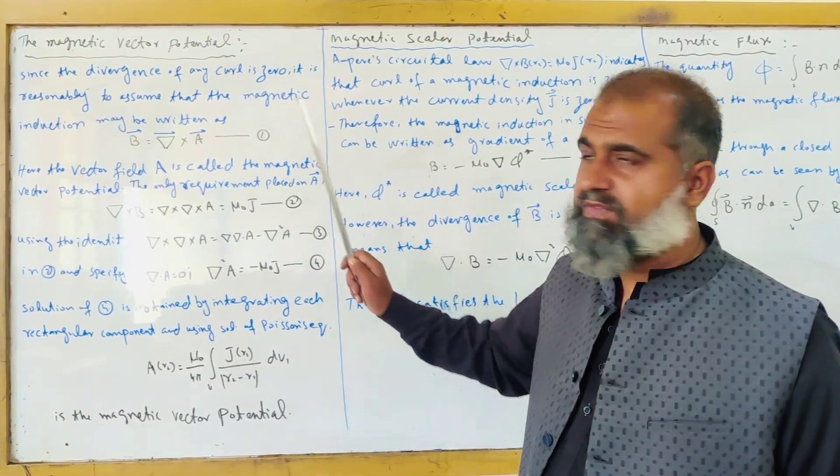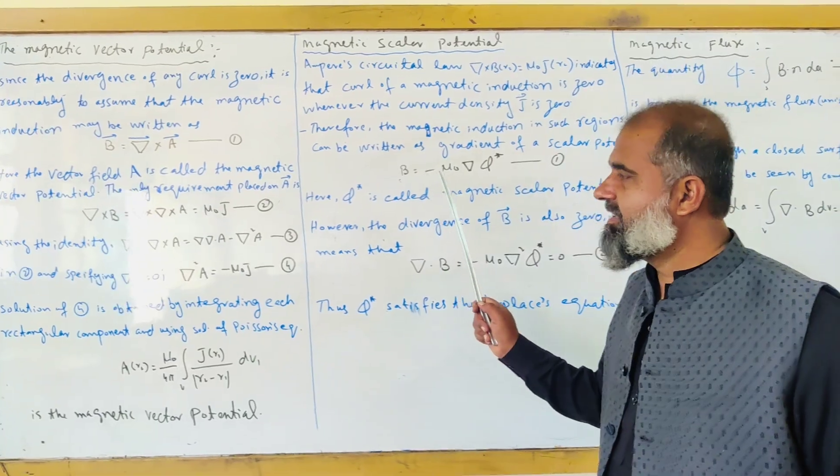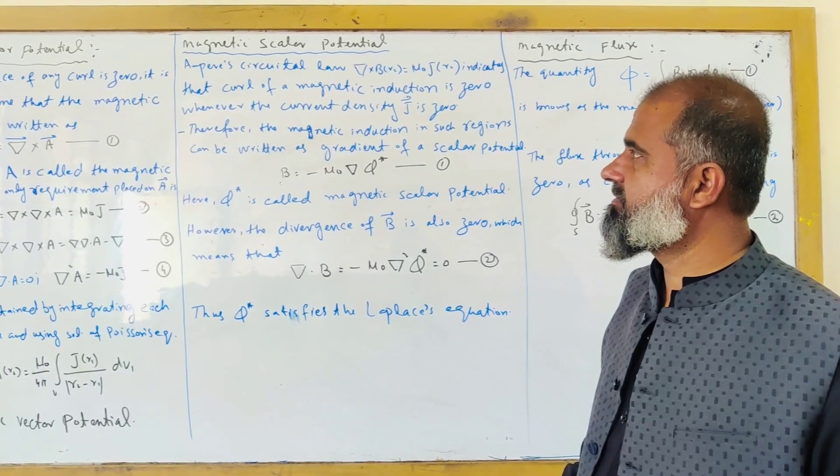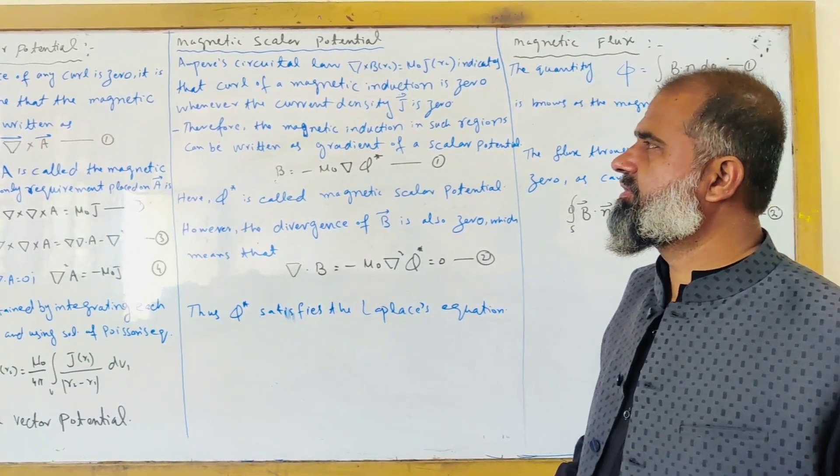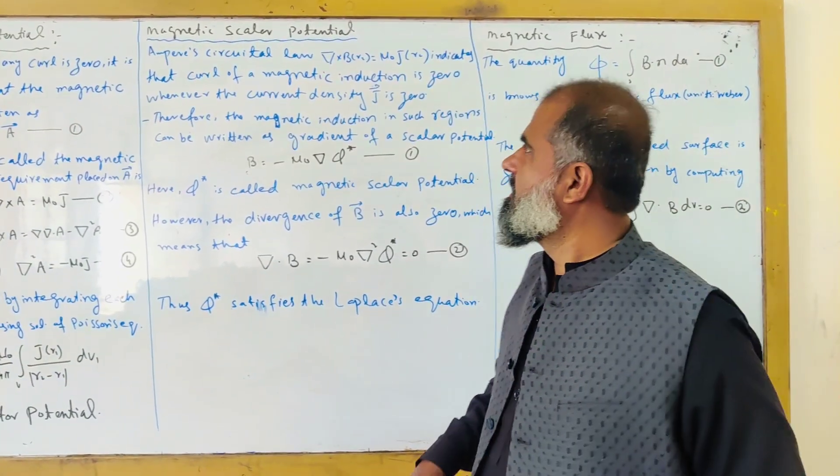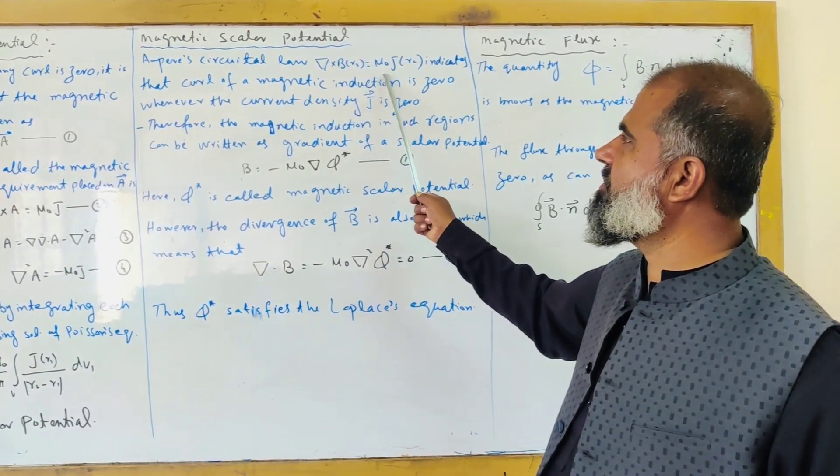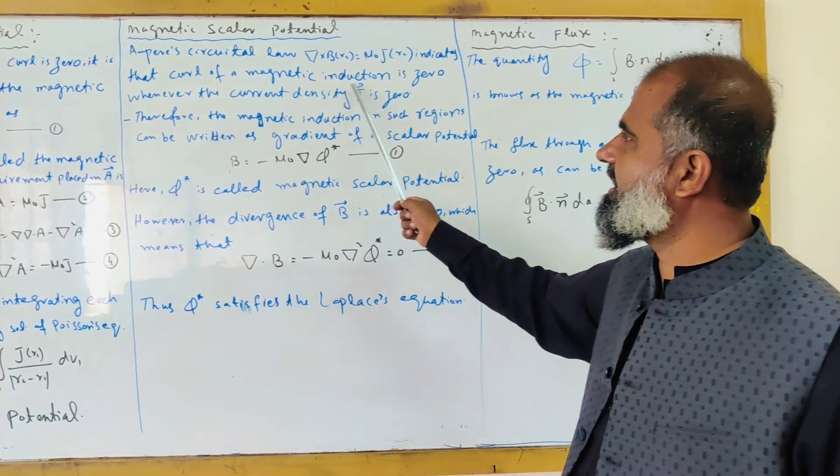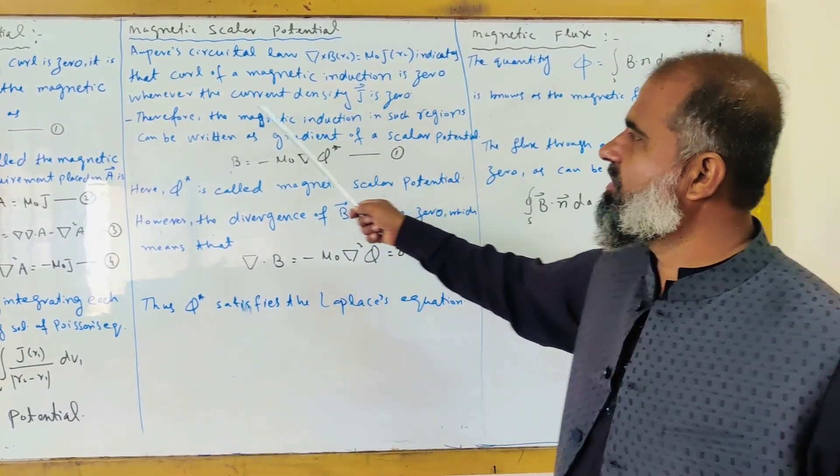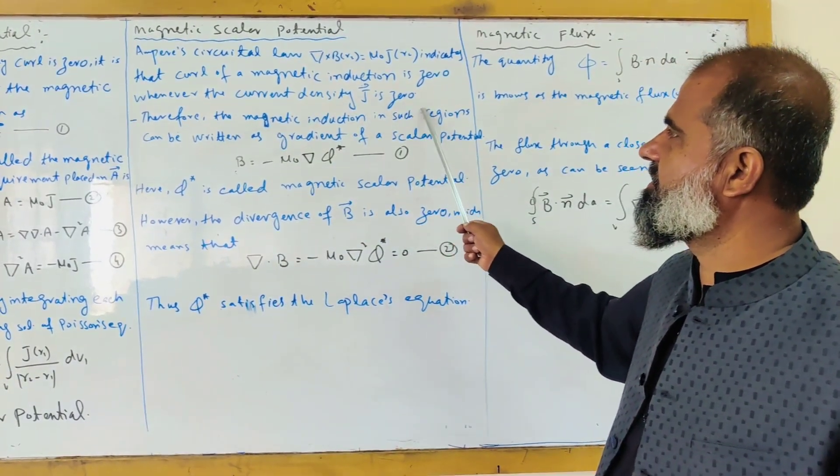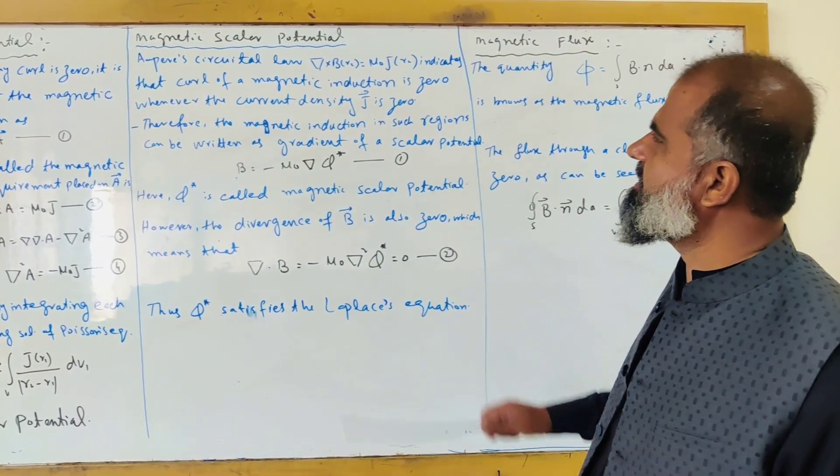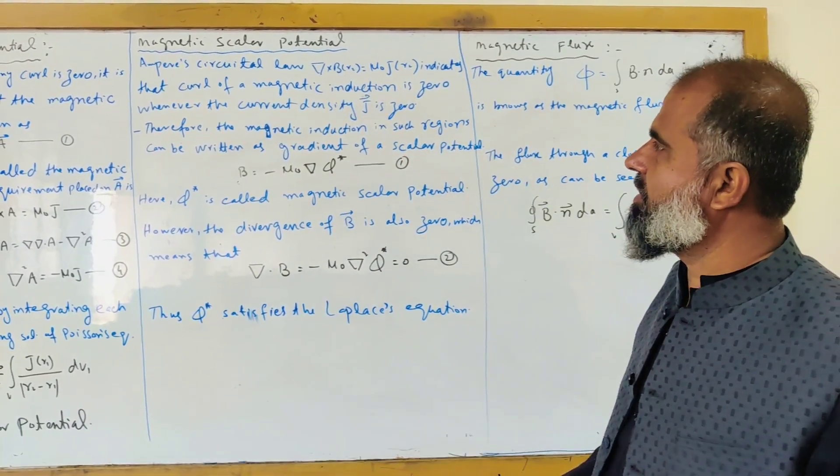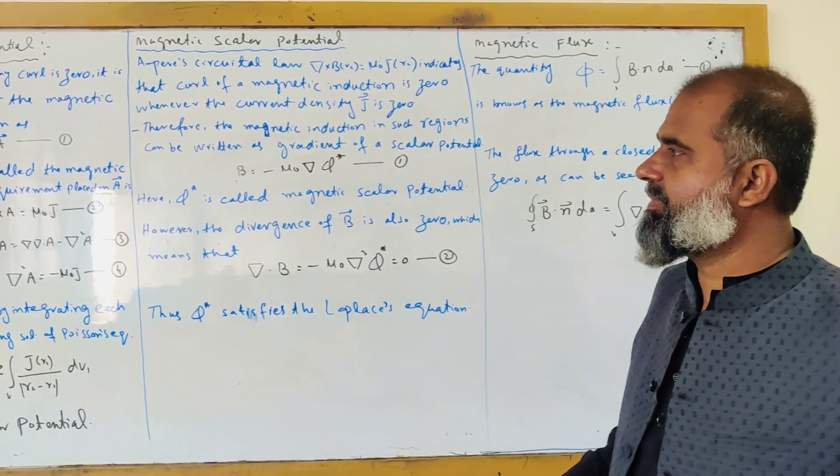This was our first definition. Now we come to our second definition, the magnetic scalar potential. We use the Ampere circuital law. Del cross B of R2 equals mu naught J of R2, which indicates that curl of the magnetic induction is zero when current density J equals zero. If you put J equal to zero, del cross B becomes zero.